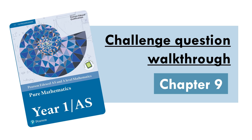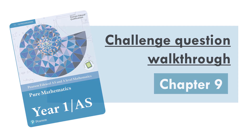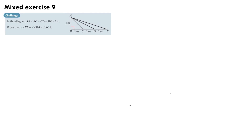Hello everyone. Today I'll be going through all of the challenge questions in LXL's Pure Year One textbook, Chapter 9. Our first and only question is from Mixed Exercise 9. In this diagram, AB equals BC equals CD equals DE equals 1 metre. Prove that the angle AEB plus the angle ADB is equal to the angle ACB.